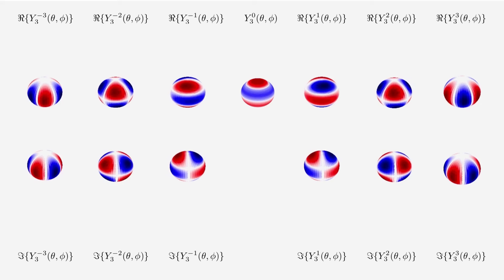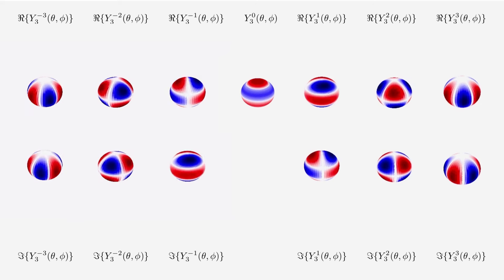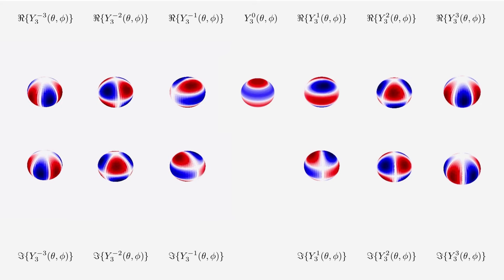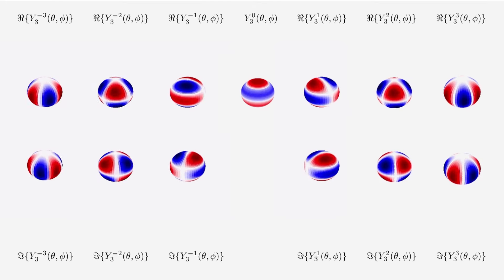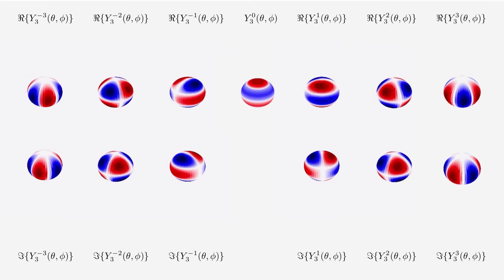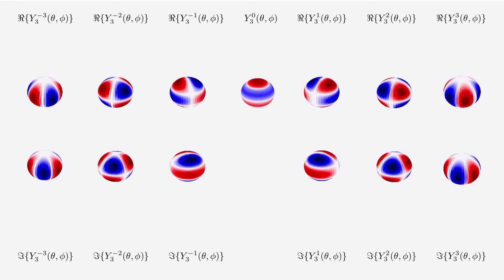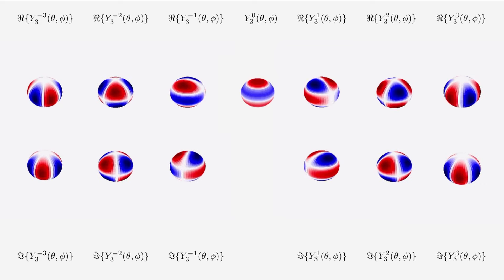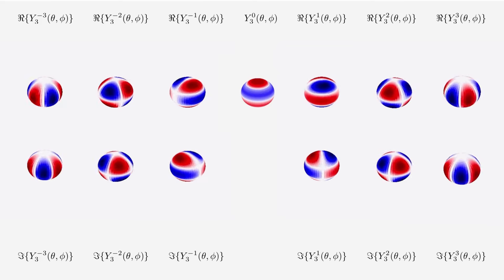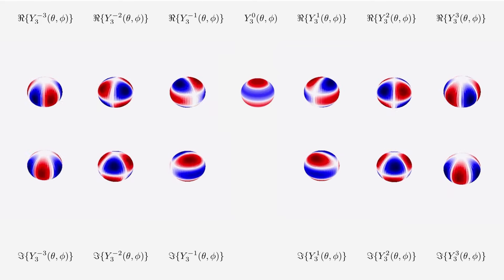We could of course go on and plot additional spherical harmonics. Here are the L=3 spherical harmonics. We can make them rotate for better visualization: Y3,−3, Y3,−2, Y3,−1, Y30 (purely real and φ-independent), Y31, Y32, and Y33. All of these figures were generated using Python, and you can have a go yourself by following the link to the Jupyter notebook in the description.